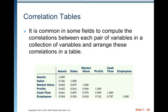Correlation tables. It is common in some fields to compute the correlations between each pair of variables in a collection and arrange these correlations in a table. You can see variables listed and the correlations among them. Notice that assets-to-assets, sales-to-sales, and market value-to-market value are all 1. Only half the table is filled in because the correlation is symmetric — market value to assets is 0.682, so assets to market value is also 0.682. There's no need to fill in the upper triangle.